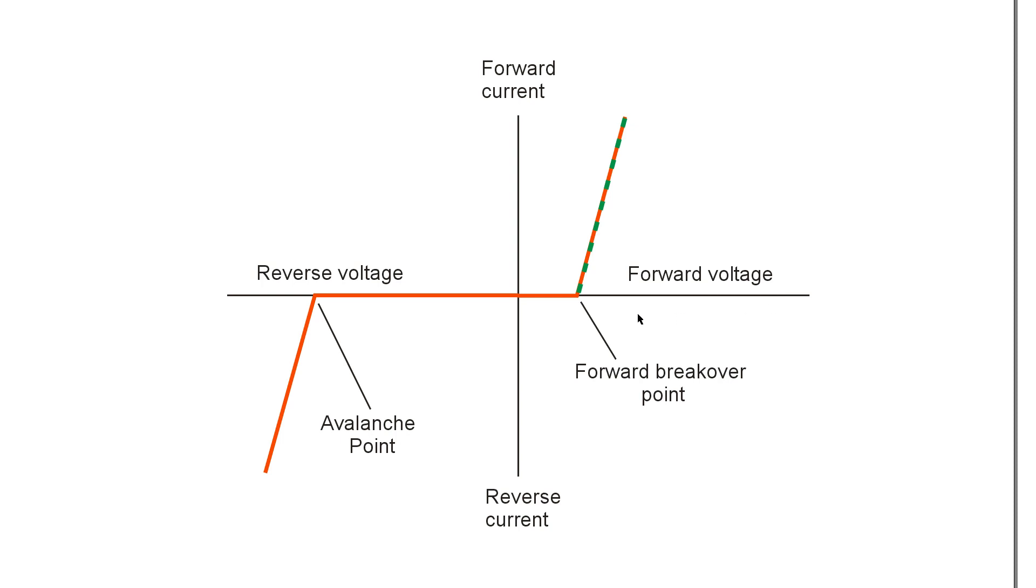Forward bias means that you apply the positive voltage to the P-type material and the negative voltage to the N-type material. Reverse bias means that you apply the reverse of the forward. You apply the negative voltage to the P-type material and the positive voltage to the N-type material.